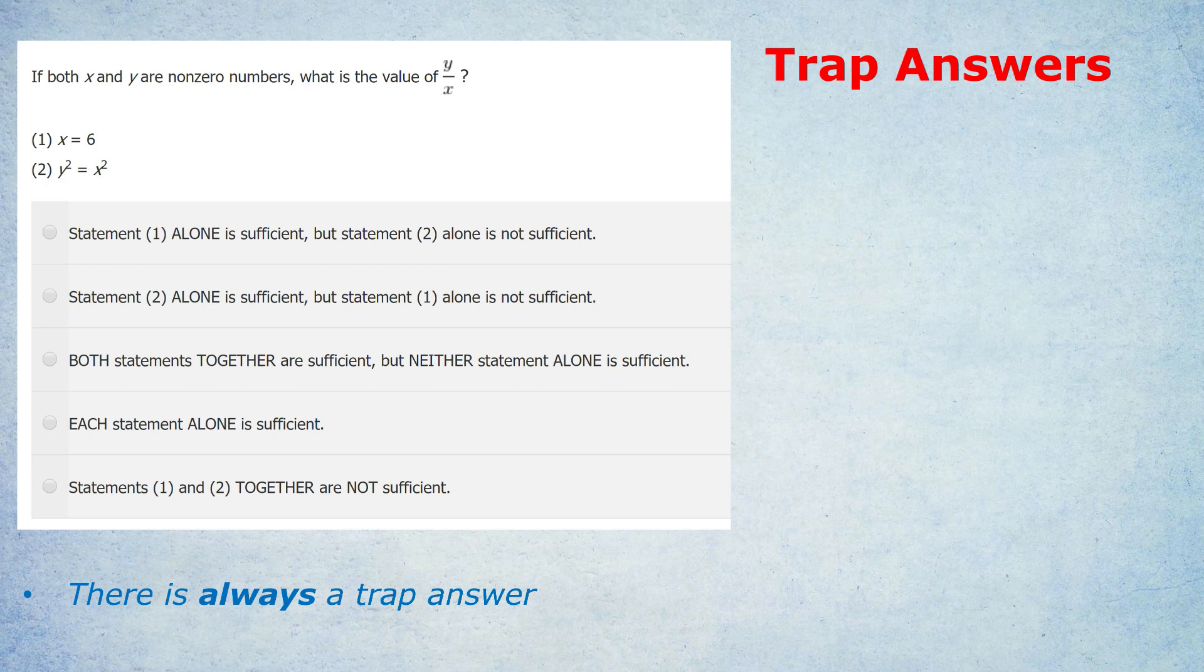So we don't always get one just because y squared equals x squared, and we have y over x. We might get minus one if they're the same number, but with a different sign. Now that we've spotted that trap, we can confidently move on and see what the correct answer is. Okay, if we have both statements together, we know x is six. We know x is positive. So x squared is 36. But we still don't know if y is six or minus six. We know it's got to be one of those two because when we square it, we've got to equal 36.